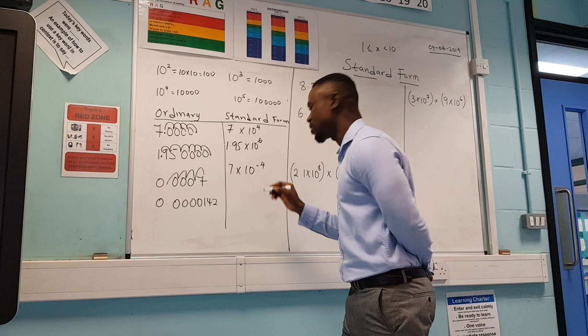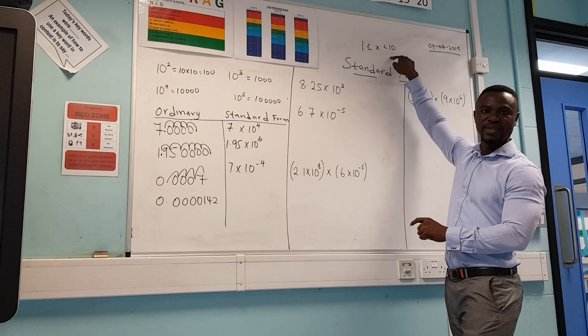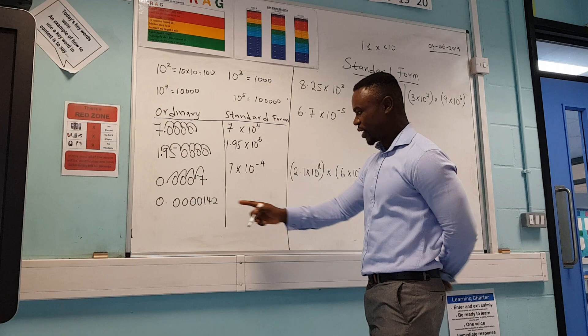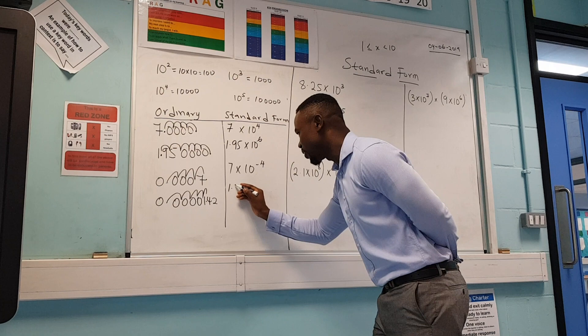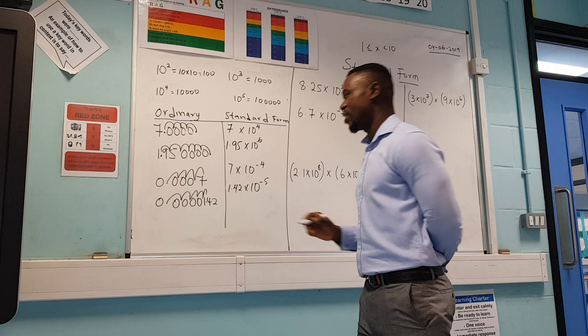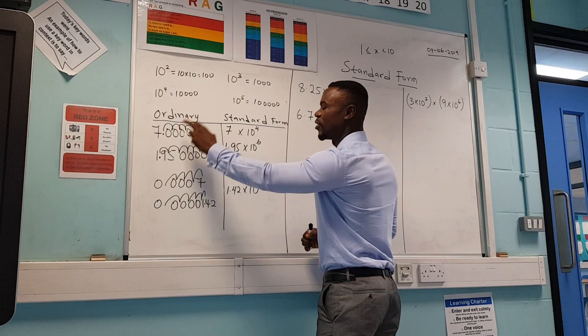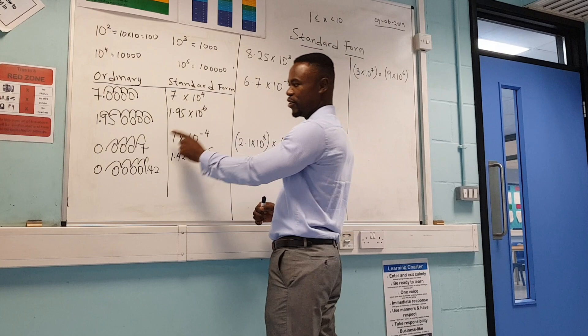You must keep moving until the number is between 1 and 10. For another example, let's move one, two, three, four, five — we stop there. So that is 1.42 times 10 to the power of minus 5. That is how you write a small number in standard form. Just follow the movement of the decimal point: move left gives a positive power, move right gives a negative power.